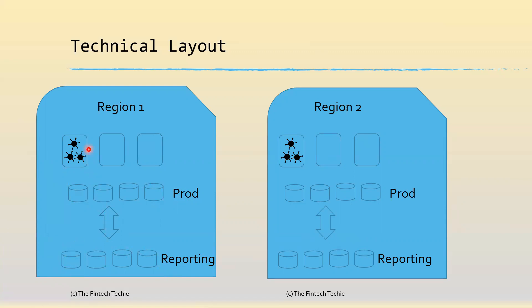The middleware is common — the same piece of code is used to service all customers; it's only the data that is segregated. If this is region one which has the production, there will be a copy in region two which will be a DR. So in cases of failures inside region one, we can easily switch over to region two, ensuring high availability.